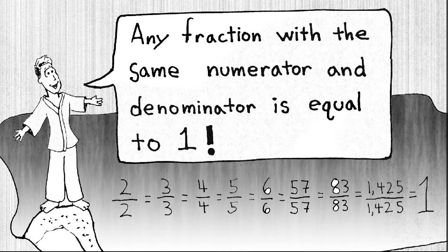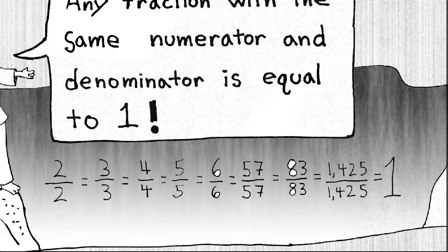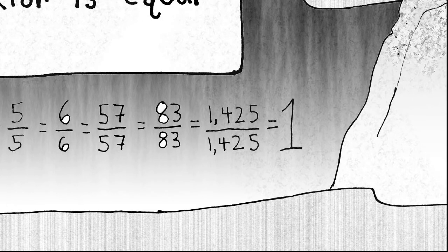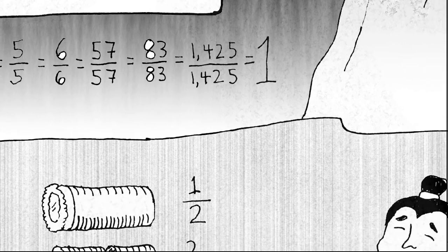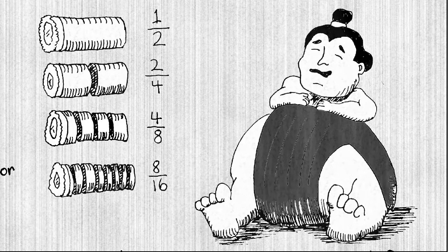Any fraction with the same numerator and denominator is equal to one. All those fractions are equal to one, which makes sense. If your denominator says you cut a sushi roll into, for example, 1,425 really tiny pieces, but you have every single one of those 1,425 pieces, that's going to equal one.